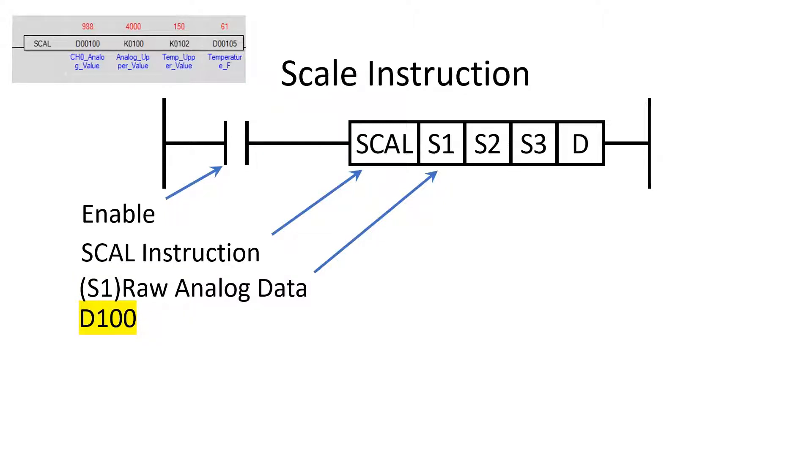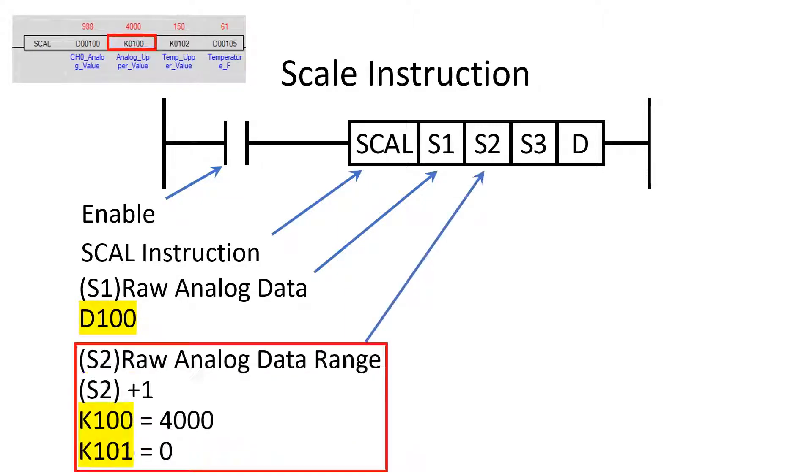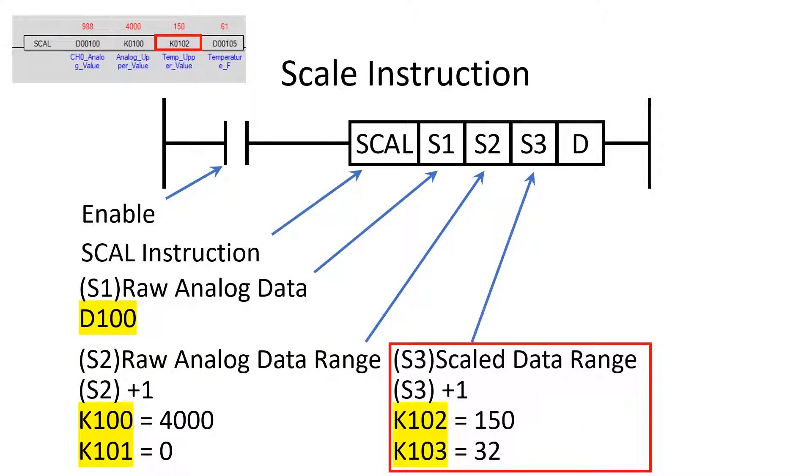Operands S2 and S3 are stored in K memory as this is retentive memory. The S2 operand is the memory location of the upper value of the raw analog range. This analog channel is set up with a max count value of 4000. S2 plus 1 is the memory location for the lower value of the raw analog range. The S2 locations are K100 and K101 for the range of 0 to 4000 counts.